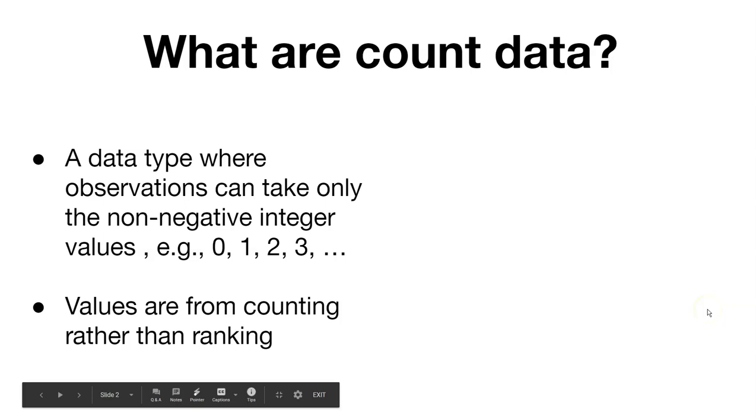So what are count data? Count data are widely used in the agriculture and natural resource disciplines. They are any observations that can take only non-negative integer values, such as 0, 1, 2, 3, and so on. These values we get from counting, not ranking.